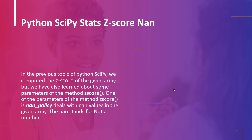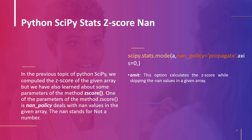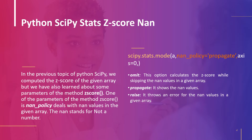The next topic is Python scipy stats z-score with NaN values. We computed the z-score of a provided array in the previous topic. Now we will learn about the nan_policy parameter, which controls how NaN values in the supplied array are handled. NaN stands for 'not a number.' The nan_policy parameter has three options: omit, which computes the z-score while ignoring any NaN values; propagate, which returns NaN values; and raise, which throws an error when the array contains NaN values.